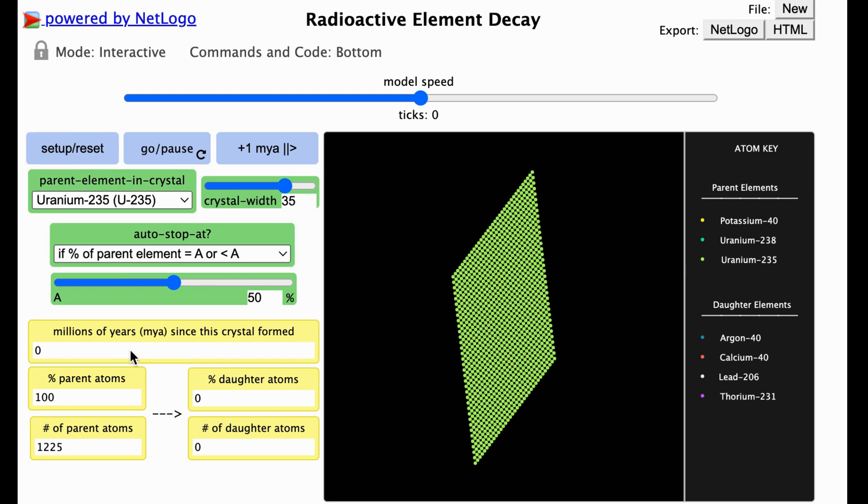Notice that the crystal's age right now is zero years because the model is not yet running. If you press this button, the model will move forward and start running one million years into the future after the crystal first formed. Each time you press it, it will move another million years forward in time.